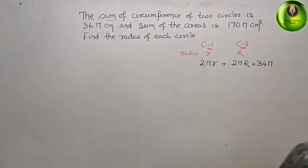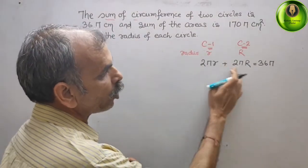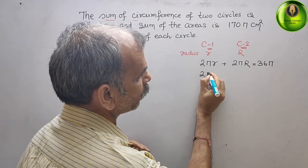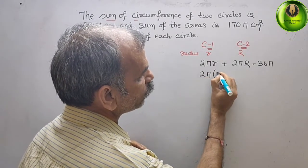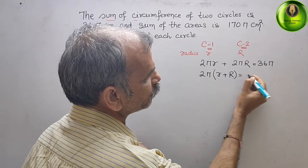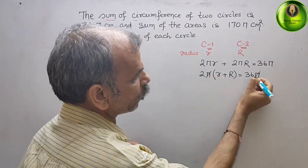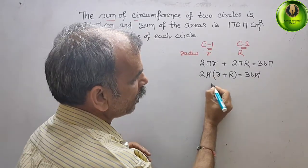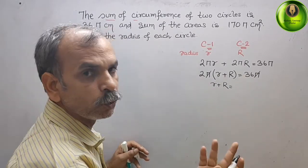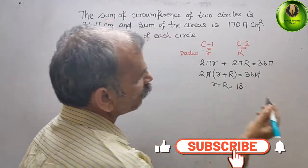Now take the common factor. 2π is common. We take 2π out, and in the bracket we get small r plus capital R, which gives 36π. Pi and pi cancel. So r plus R equals 36 divided by 2, which is 18. This is our first equation.